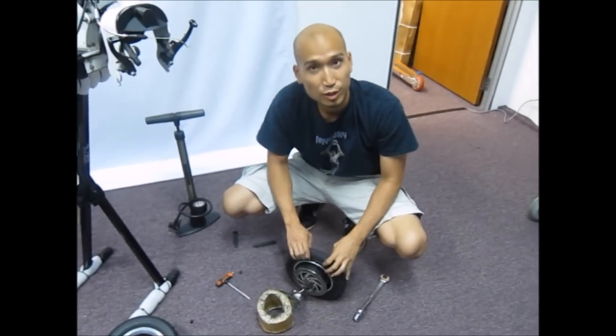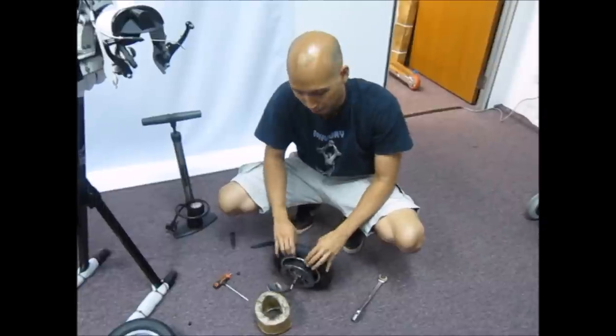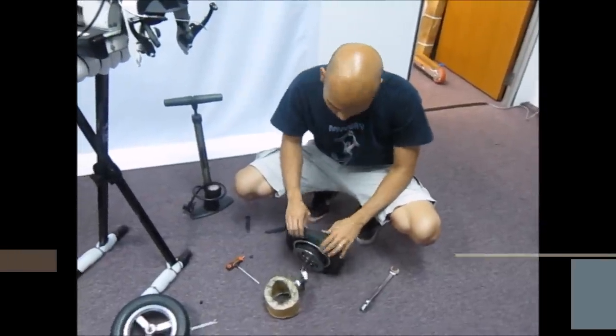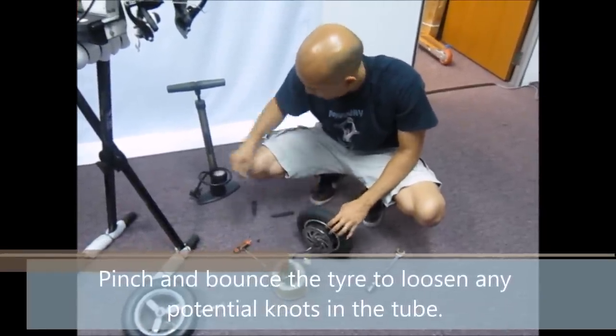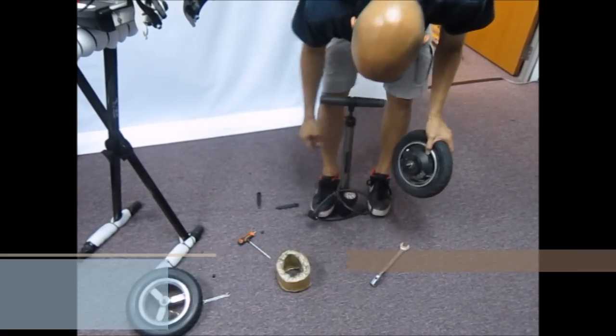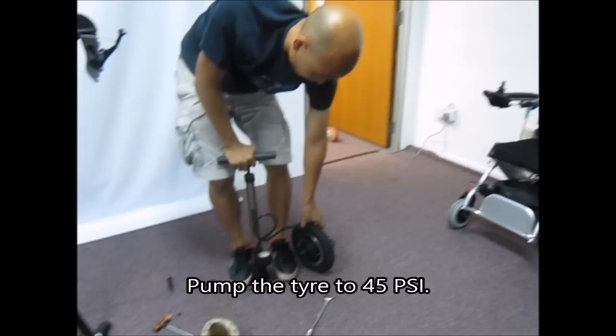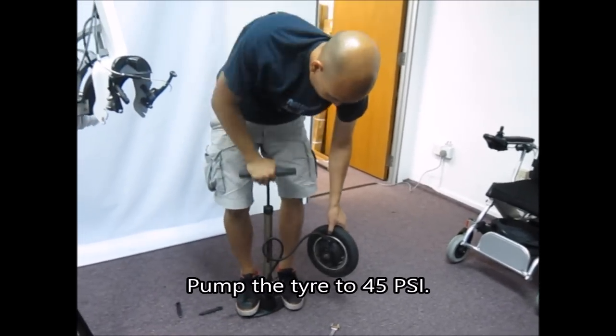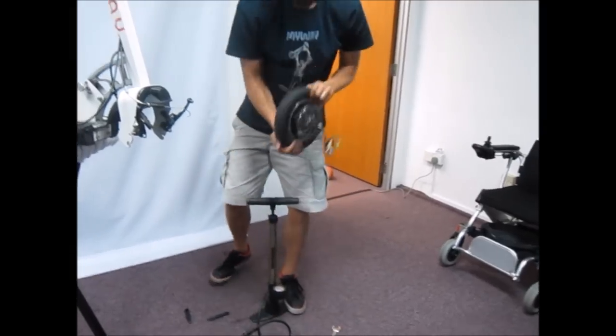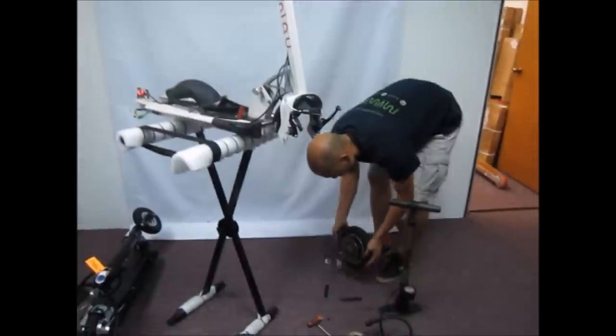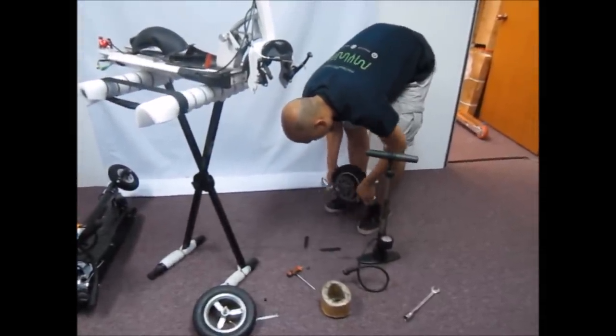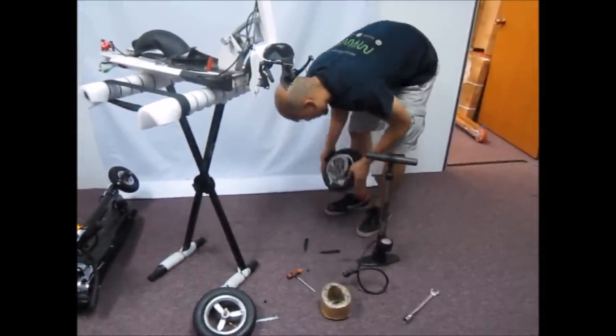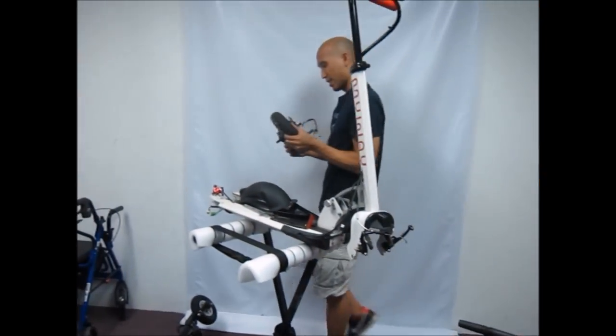Pinch the tire to make sure that there are no knots. Bounce it a little bit. Pinch and bounce at the same time and inflate it to 45 psi. Now just bounce it a few more times, make sure the knots are all gone. Now ready to install.